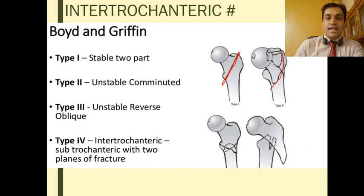Type 2 is a Type 1 with a main fracture line along the intertrochanteric line but with comminution in variable planes.